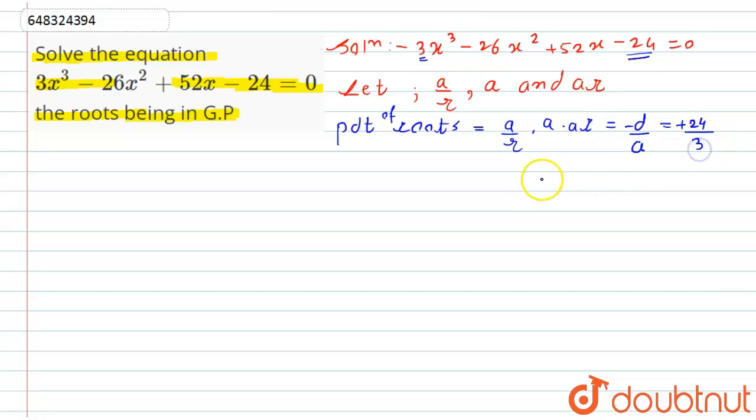a times a times a will become a³ equals 8. This implies a³ equals 2³, which equals 2. So here we got one root as 2. Now similarly we know that the sum of roots is